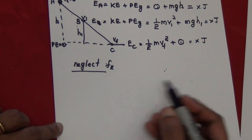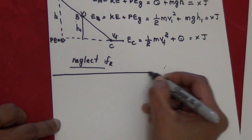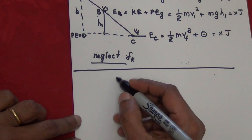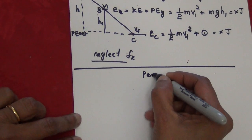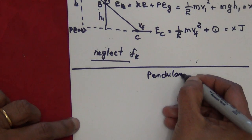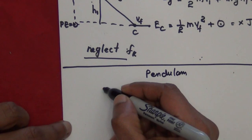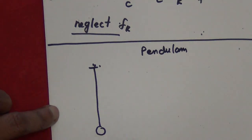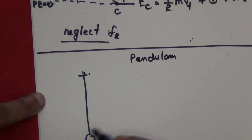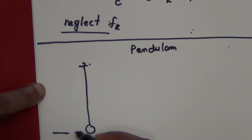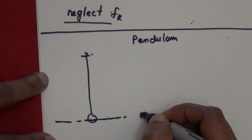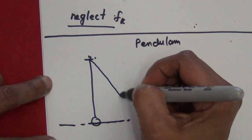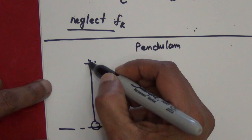Before going into problems, let me give one more example: a simple pendulum. When the pendulum is at rest it hangs straight down, then it swings. I'm going to take the lowest point as my zero potential energy level, so it swings from one side to the other.